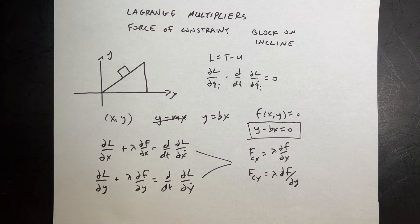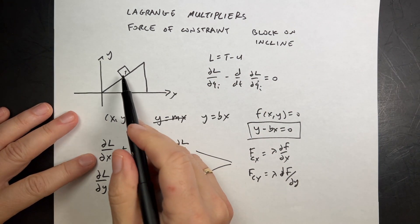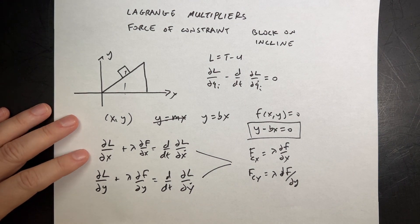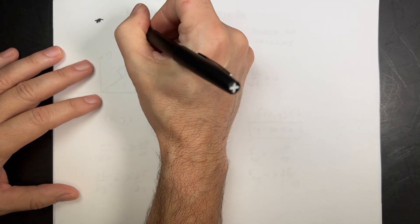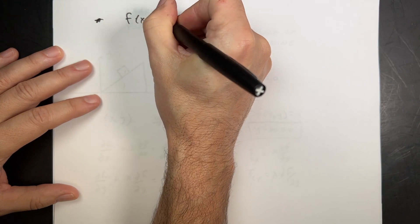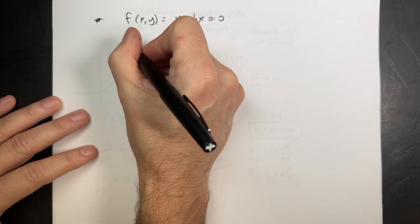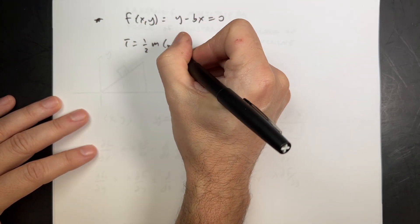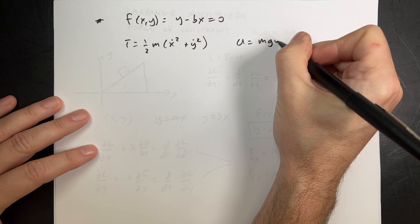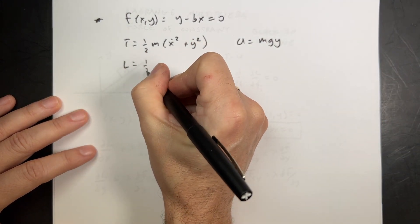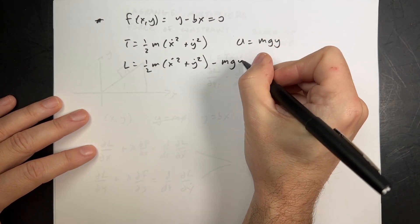The constraint equation is f(x, y) = y − bx = 0. The kinetic energy in Cartesian coordinates is T = ½m(ẋ² + ẏ²), and the potential energy is U = mgy. So the Lagrangian is L = ½m(ẋ² + ẏ²) − mgy.